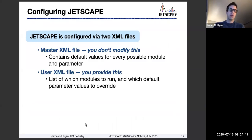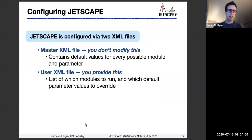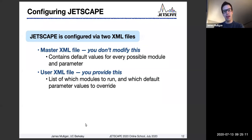Welcome to the configuration of Jetscape. Jetscape is configured by two different XML files. XML is just a type of configuration file, and the two types are what we call a master XML file and the user XML file. The master XML file contains all of the possible parameter values for every possible module that you can run in Jetscape. It is something you won't modify itself, but rather it serves as a reference for what is possible and what options you can run Jetscape with.